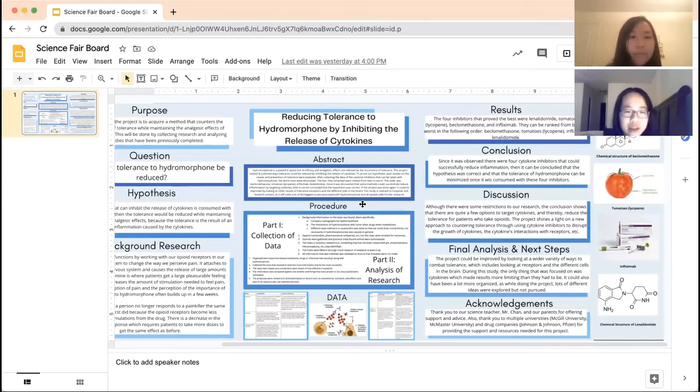Looking back we think that the project could be improved by looking at a variety of ways to combat tolerance which includes looking at receptors in the different cells in the brain but we didn't do that which made our report more limiting than it had to be. Also not as much research had been done about this topic which made it hard to make connections and conclusions.